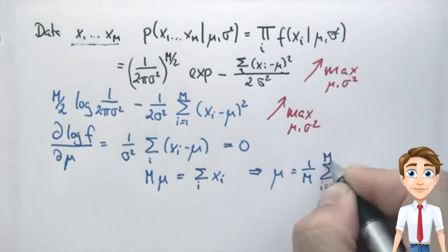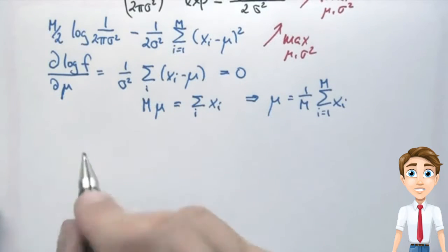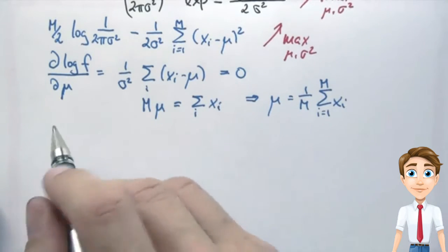we proved that the mean is indeed the maximum likelihood estimate for the Gaussian. This is now easily repeated for the variance.